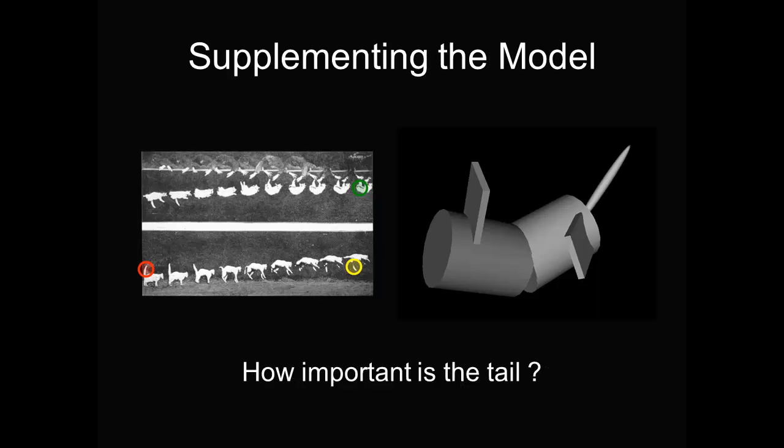In parallel with this augmentation of the objective function, we noticed that the tail might play an important role in the cat's flip. So we added a 2 degree of freedom tail to some of the models. You will see two of these models on the next slide.